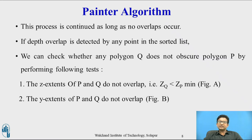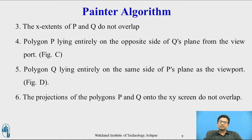Test two: the Y-extents of P and Q do not overlap. Test three: the X-extents of polygon P and polygon Q do not overlap. Test four: polygon P lies entirely on the opposite side of Q's plane from the viewport. Test five: polygon Q lies entirely on the same side of P's plane as the viewport. Test six: the projections of polygon P and Q onto the XY screen do not overlap.